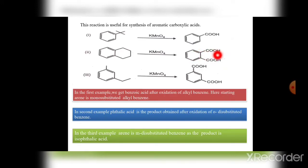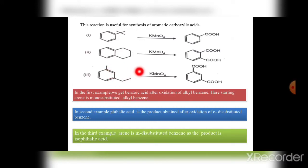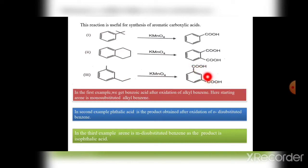The product phthalic acid means the benzene has two –COOH groups. In the third example, it is a 1,3 relationship — benzene containing substituents at positions 1 and 3 — called meta-disubstituted benzene. The final product is isophthalic acid. Meta-disubstituted benzene on treatment with KMnO₄ gives oxidation of the side chain and we get –COOH groups at the 1,3 positions — this compound is isophthalic acid.